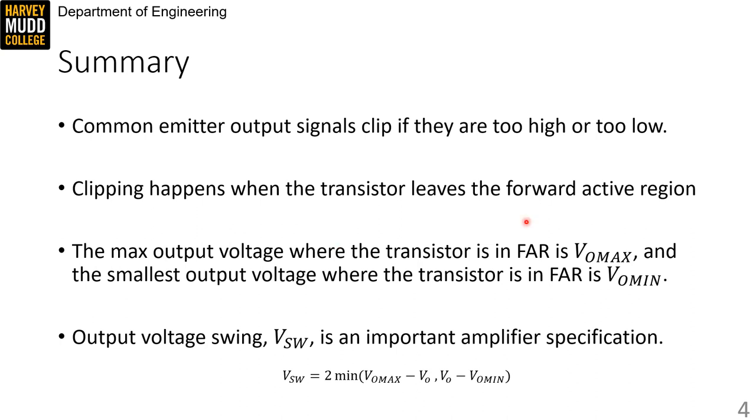In summary, common emitter output signals clip if they're too high or too low. Clipping happens when the transistor leaves the forward active region. The maximum output voltage where the transistor is in forward active region is VO_MAX, and the smallest output voltage where the transistor is in forward active region is VO_MIN. Output voltage V-swing is an important amplifier specification that compares VO_MAX and VO_MIN to our large signal VO, and then doubles the smaller of those to indicate the largest peak-to-peak signal that we could have running in our circuit.